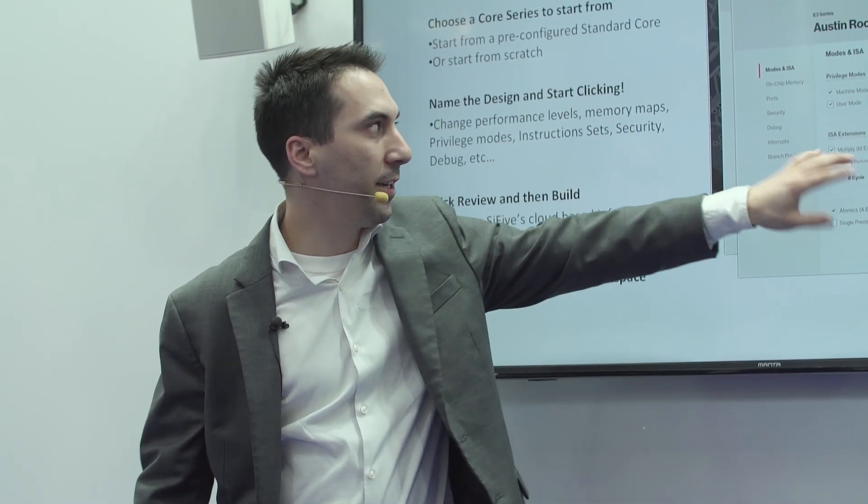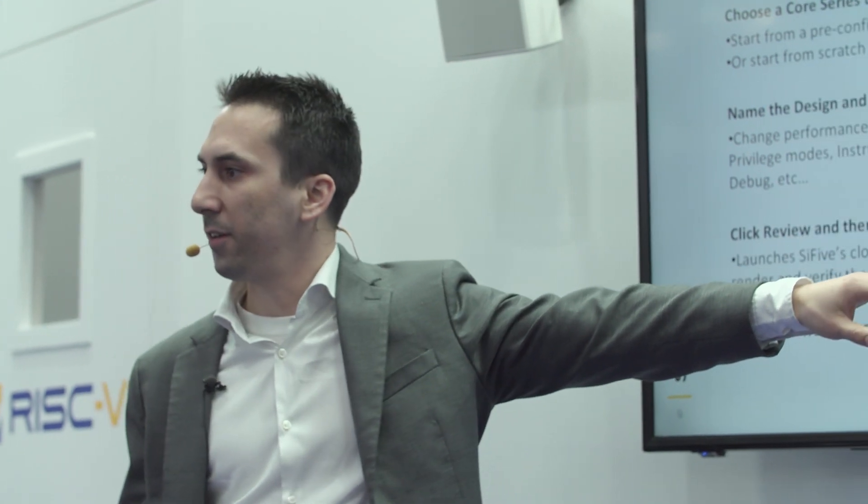After you click Start Designing, you select a core series — 2, 3, 5, or 7. Then you name the core and pick all the parameters you like across several pages. The tool is currently in beta and anyone can use it today, though the beta doesn't yet represent the entire configuration space. Over the course of this year, we'll continue to build out Core Designer to match the full capabilities of core configuration.